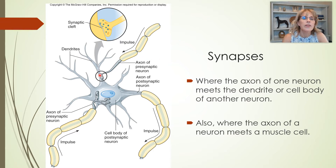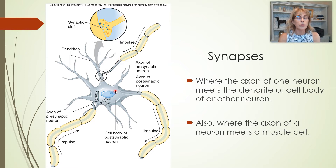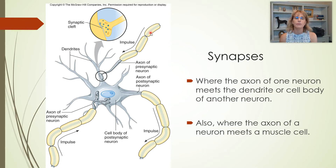The axon terminus is going to come in contact with either a dendrite or the cell body of the next neuron down the line. Information will go from the upstream neuron to the downstream neuron — its dendrite or cell body — and information will not go backwards. So there are sending cells and receiving cells.